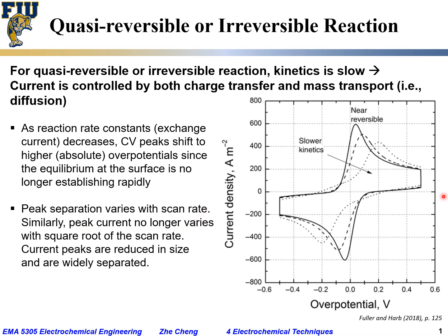Similarly, peak current no longer varies with the square root of scan rate. Current peaks are reduced in size — they are getting lower in absolute value — but they are more widely separated. They become lower and broader, as shown here, going from near reversible to semi-reversible to more and more irreversible.